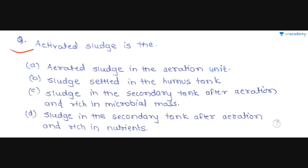Let's start with this lesson. The first question is: what is activated sludge? Option A is aerated sludge in the aeration unit. Option B is sludge settled in the humus tank. Option C is sludge in the secondary tank after aeration and rich in microbial mass.